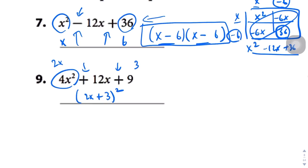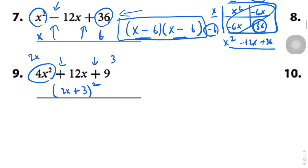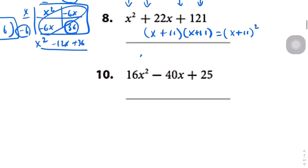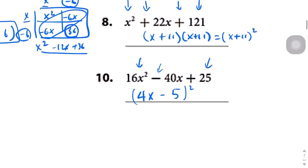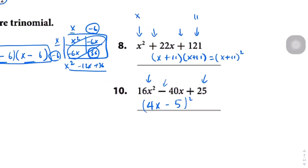Let's jump straight to the shortcut. The a term is going to be 4x — the square root of 16 is 4, and the square root of x squared is x. Then the square root of 25 is 5. And look at this — it's a minus, so we're going to end up with two minus signs, just like the first one. So this is our answer: 4x minus 5, squared.